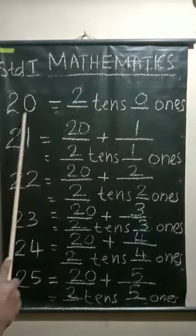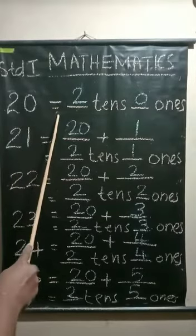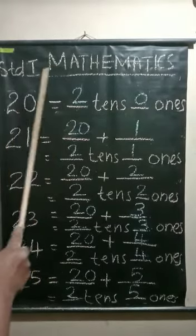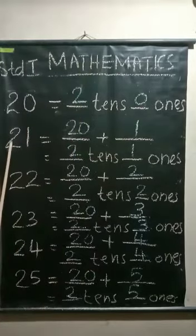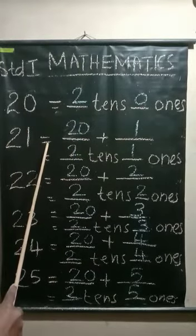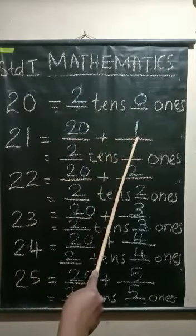Twenty equals how many tens, how many ones? Two tens, zero ones. Twenty-one equals twenty plus one. Twenty-one, two tens, one ones.